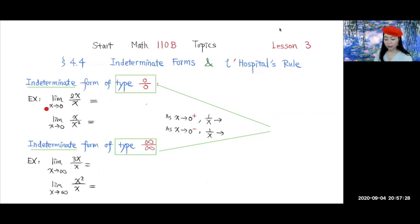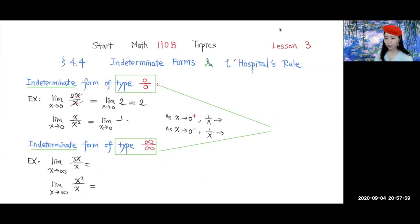Take a look at this limit over here. Both the numerator and the denominator go to 0 as x goes to 0, so this is a limit of type 0 over 0. How can I evaluate this limit? Well, we can divide out this x, and that gives us 2. So the limit is equal to 2.